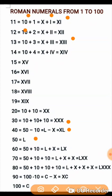50 is represented by L. 60 is 50 plus 10, which is L plus X, written as LX. 70 is 50 plus 10 plus 10, written as LXX. 80 is 50 plus 10 plus 10 plus 10, written as LXXX. Since X is already repeated 3 times, for 90 we use 100 minus 10. 100 is C and 10 is X, so C minus X becomes XC, with X written before C.